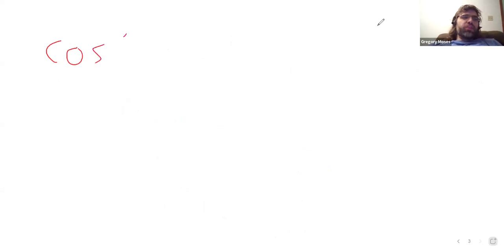We can use this identity to find a value, to evaluate the cosine. Let's find the exact value of the cosine of 75 degrees. Now, 75 degrees isn't a value whose cosine we know.